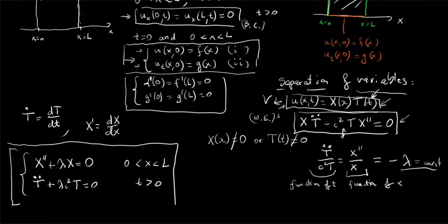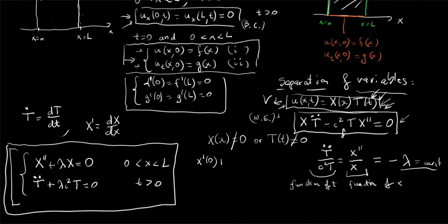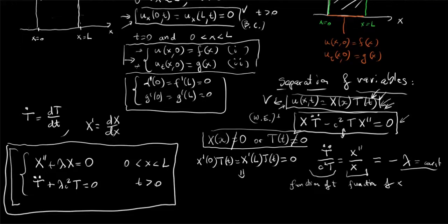This is a consequence of our separation of variables assumption. Now we impose boundary conditions on the postulated solution. We require X prime at 0 times T of t equals 0 and X prime at L times T of t equals 0 for all t greater than 0. Since we want nontrivial T, this implies X prime at 0 equals X prime at L equals 0.